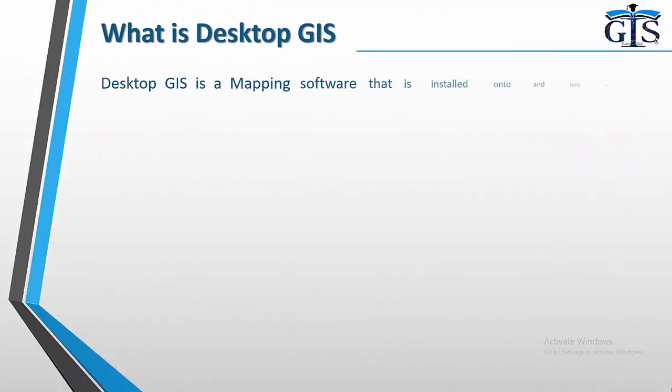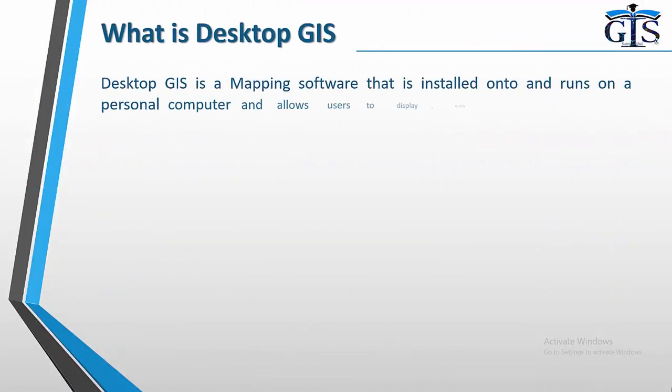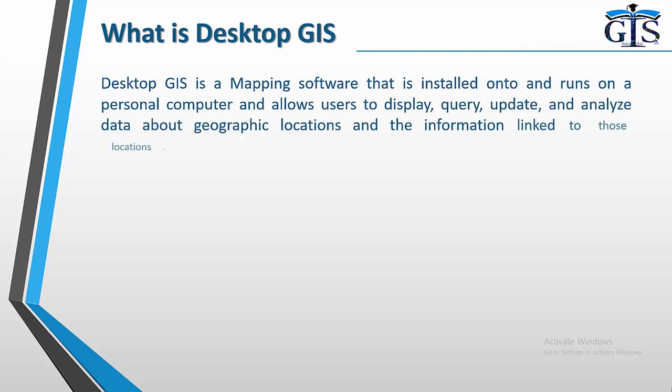What is Desktop GIS? Desktop GIS is a mapping software that is installed onto and runs on a personal computer, and allows users to display, query, update and analyze data about geographic locations and the information linked to those locations.